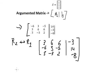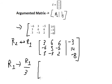Row number one should be divided by three. So in this situation we have: one, two, two, negative one.